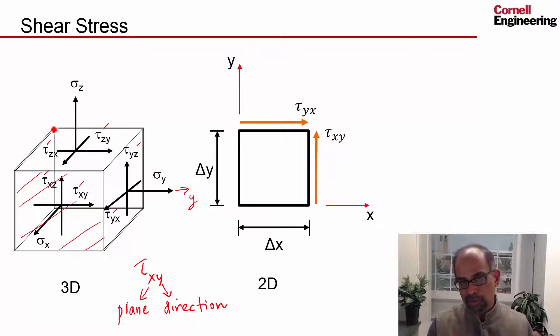If I go to a corresponding two-dimensional view here, like I did in the case of normal stress, here I have sketched in tau xy - that's this one over here. So that's this one, and correspondingly tau yx, that's this one.